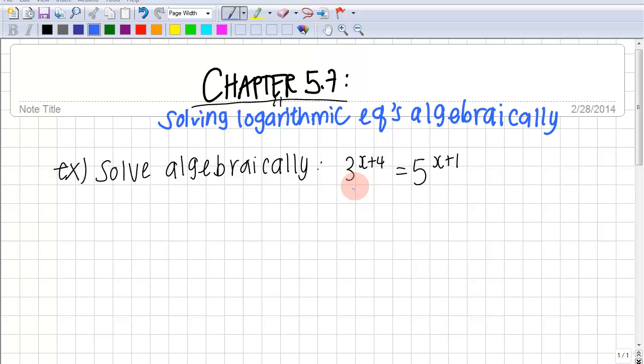We are given the equation 3 to the power of x plus 4 is equal to 5 to the power of x plus 1. We can rewrite this as log 3 to the x plus 4 is equal to log 5 to the x plus 1.